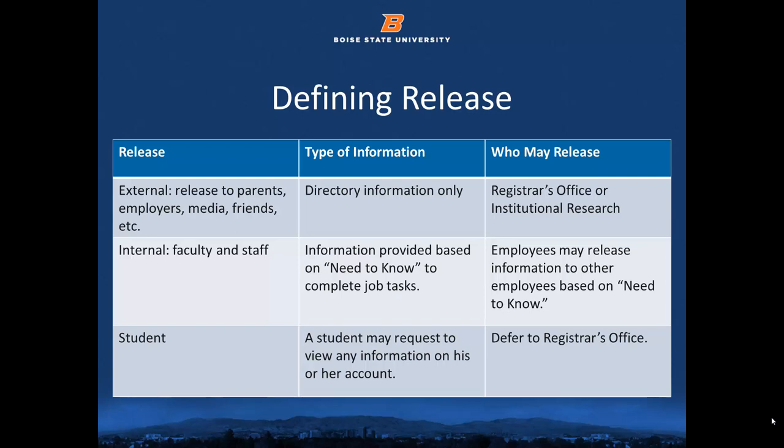In cases where you have express written consent from the student, you may release information, but best practice is to defer to the experts. In cases where you may be asked to write a letter of recommendation or serve as a reference for a student, you must have written consent to do so — that may be in the form of an email from the student, but it must be written. If a student has requested full privacy in their MyBoise State account, we cannot release anything, not even directory information. Only directory information as defined by FERPA and Boise State policy may be released externally without student consent, and only by the registrar's office or institutional research, except when you have written consent from the student.